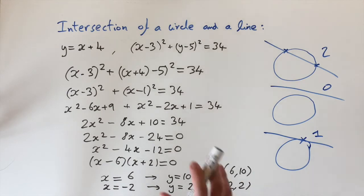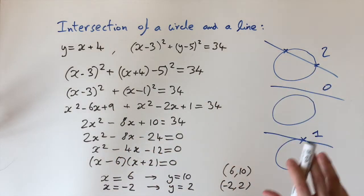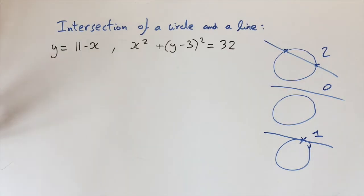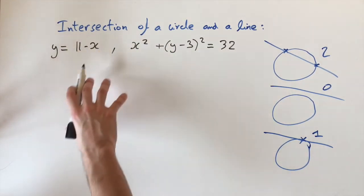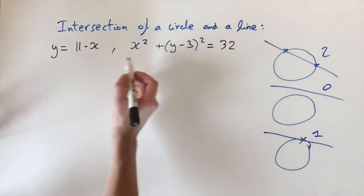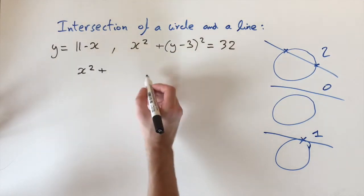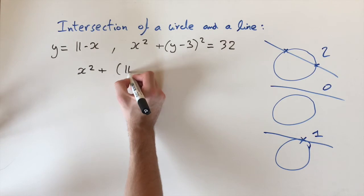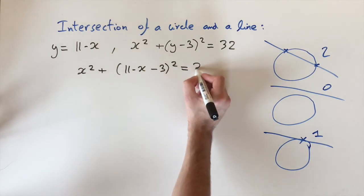I've got one more example to show, using a very similar method but corresponding to a different number of solutions. We have a new equation of a line and a new circle. The method is essentially the same: isolate one variable, which we already have, then substitute into the second equation. So we substitute: x squared plus, replacing y by 11 minus x, so 11 minus x minus 3, squared, equals 32.